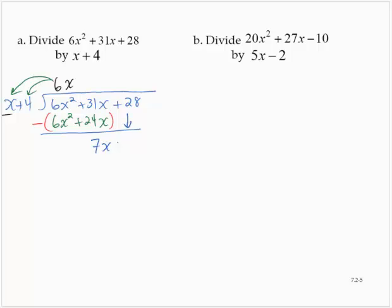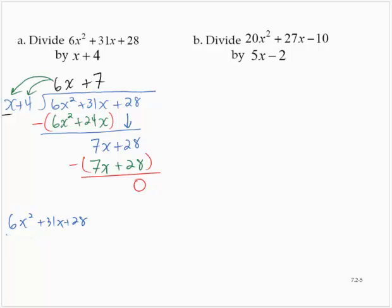We drop down the plus 28 and repeat the process. 7x divided by x is 7. Multiplying back: 7 times x is 7x, and 7 times 4 is plus 28. Subtracting leaves 0, so there's no remainder. That tells us 6x squared plus 31x plus 28 divided by x plus 4 is equal to 6x plus 7.